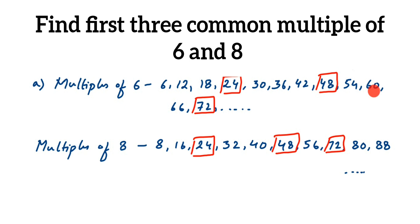In case they ask for more common multiples — like four or five — you would need to find more multiples of six and eight until you reach the required ones. You can keep multiplying: for six we went up to seventy-two, so for the next common multiple continue with six thirteens and beyond.